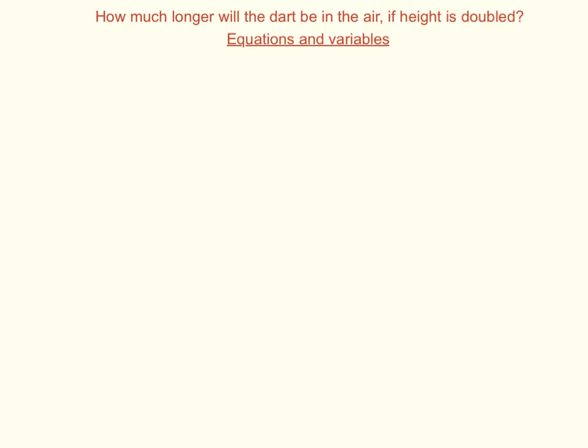So our question is how much longer will the dart be in the air if height is doubled? When I see a problem like this and I'm going to use equations and variables to solve it, I need to know what variables are changing. How much longer means I'm changing time. If height is doubled that would be changing the delta y, how height is going in the air.